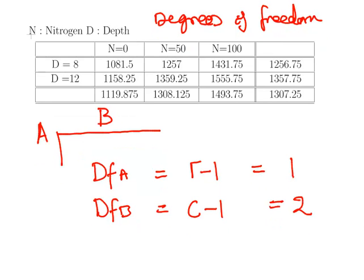For the interaction effect, the interaction degrees of freedom is the multiple of those two. So it's two times one, also equal to two.